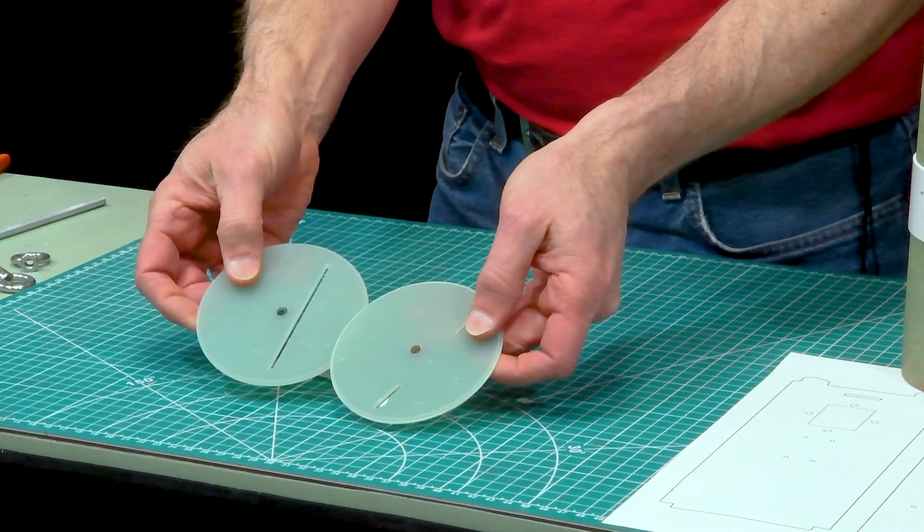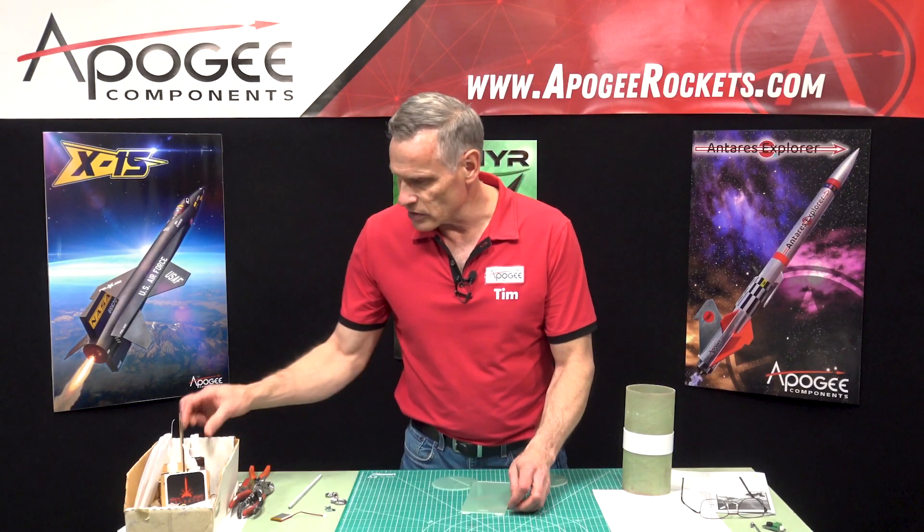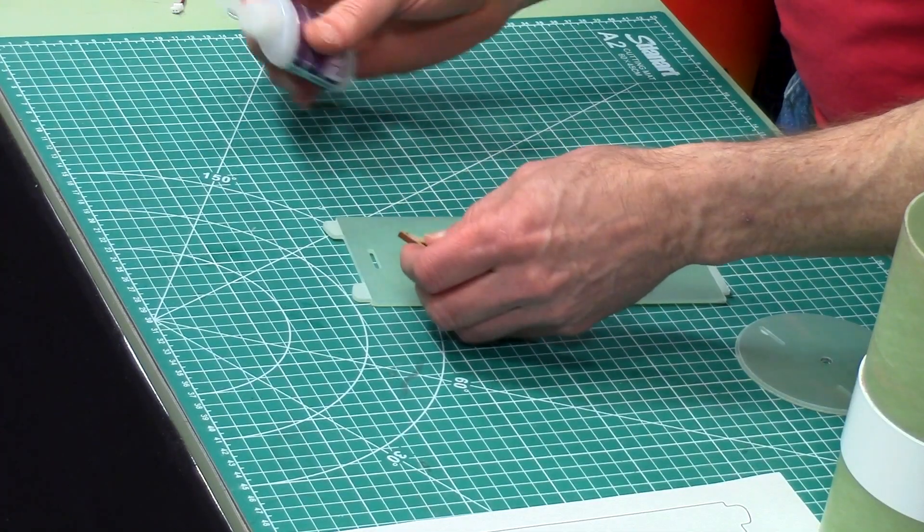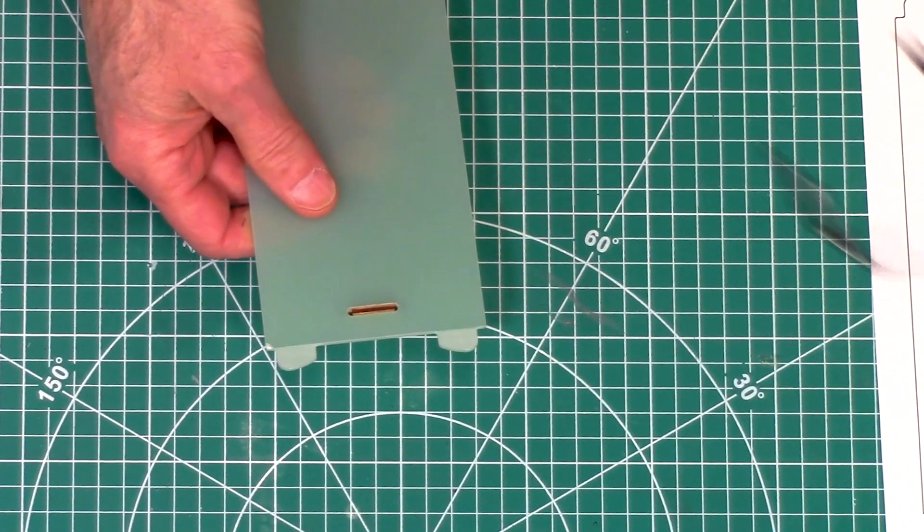It's gonna go through both of the holes in the bulkheads. So I'm just gonna take some medium thick super glue. Actually, let me put it in first, make sure it's aligned properly.